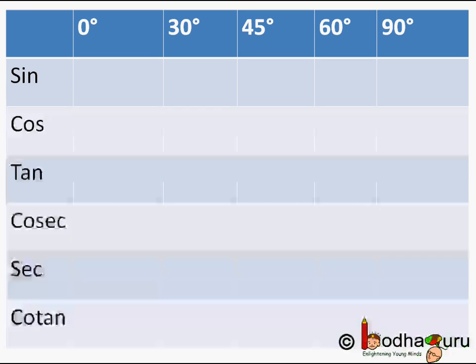Now let us try to calculate the trigonometric ratios for all these angles. Here is a table I have created with all the angles — 0°, 30°, 45°, 60°, and 90° — in the top row, and the various trigonometric ratios — sin, cosine, tan, followed by cosec, sec, and cotangent — in the columns.